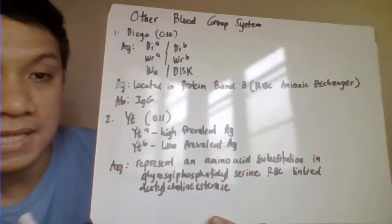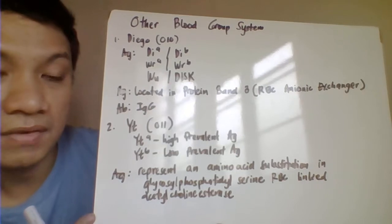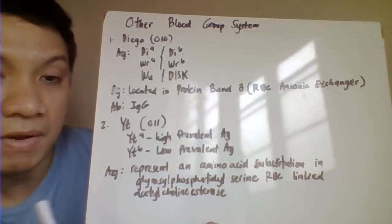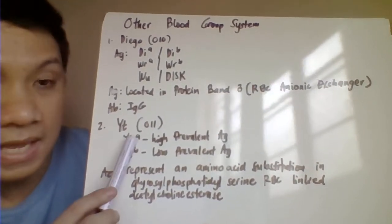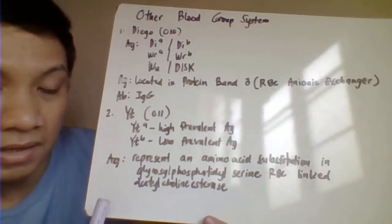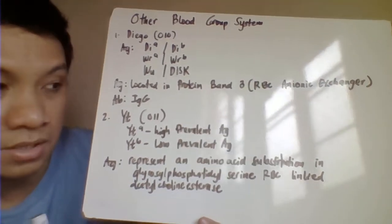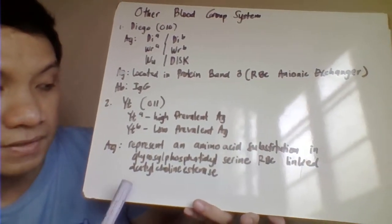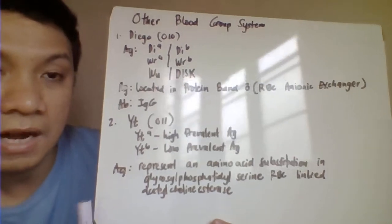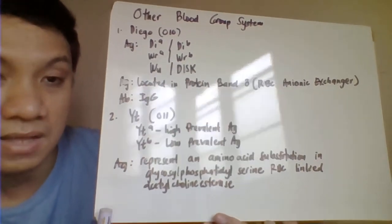Next, we have your YT blood group, 011 ISBT classification number. This includes the high-prevalent antigen YT A and the low-prevalent antigen YT B. This blood group represents the amino acid substitution found in RBC membrane glycosylphosphatidylinositol and the RBC linked acetylcholine esterase.